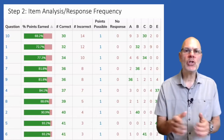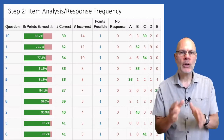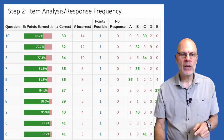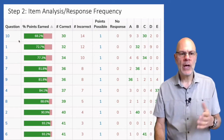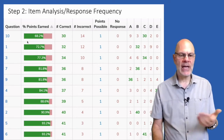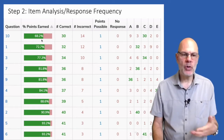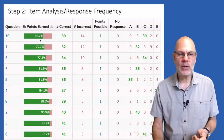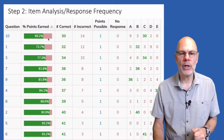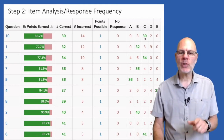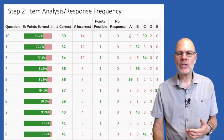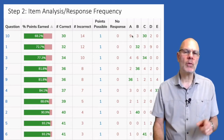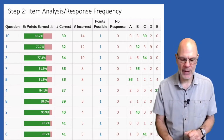This screen shows you what response frequency looks like. Most learning management systems will give you something like this. What you're seeing here is that question 10 in this set had the most wrong responses — only 68% of my students got it right, which means about 31% got it wrong. This feature also tells me which was the most frequent wrong response, giving me insight into how my students are thinking.